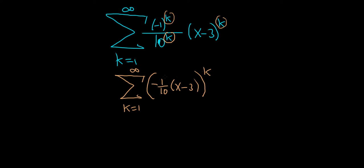If we go backwards, it basically means you raise the negative 1 to the k, the 10 to the k, and the x minus 3 to the k, so it's the same thing. So now you see you have something to a power, that's going to be your r. So r is negative 1 tenth, x minus 3.